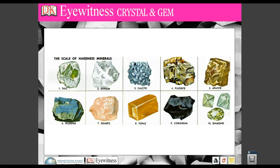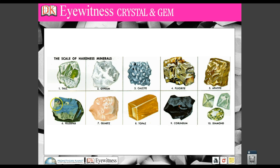Here are some other common materials and where they lie on the Mohs scale. Your fingernail has a Mohs hardness of 2.5, which means it can scratch talc and gypsum, but it can't scratch calcite. A penny has the same hardness as calcite — it can scratch talc and gypsum and your fingernail, but everything above it can scratch it. An iron nail is 4.5, in between fluorite and apatite. Glass is at 5.5, between apatite and feldspar. Feldspar can scratch glass, as can quartz, topaz, corundum, and diamond. Diamond can scratch everything on here; talc can scratch none of it.